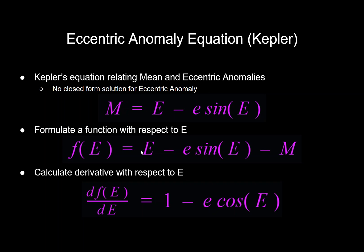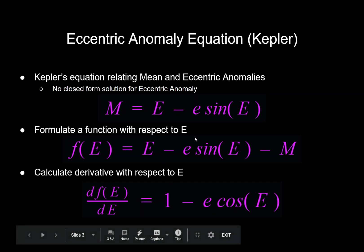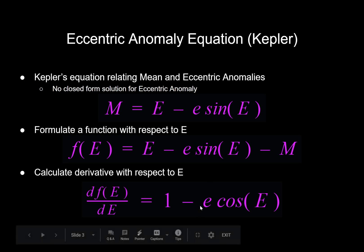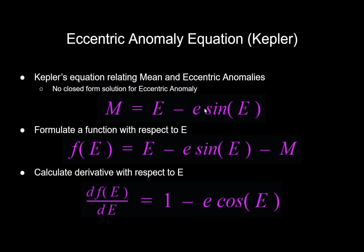In order to use Newton's method to solve that, you need to know the derivative of your function with respect to E, which in this case is actually very simple: just one minus e·cos(E), where the little e is eccentricity and the big E is eccentric anomaly. Again, there's more information about that in my TLE video.